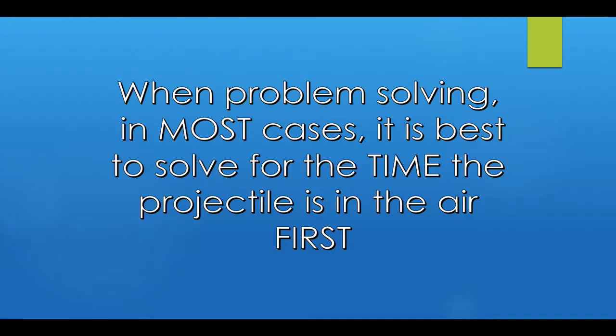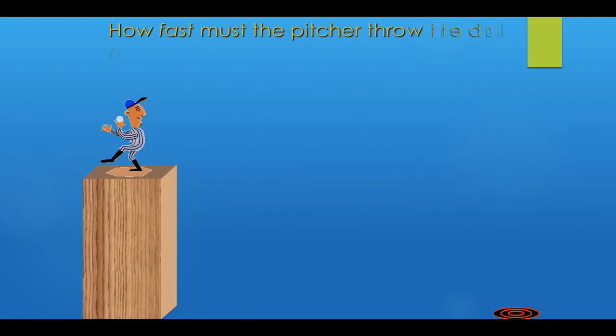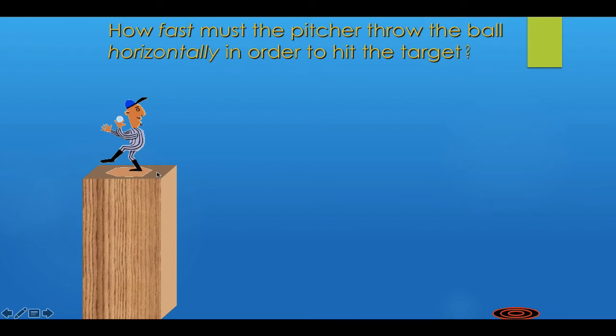Since time is the only constant across both horizontal and vertical components, we usually solve for time first. In this example, a pitcher is standing on a wooden platform 7.2 meters above the ground, trying to hit a target 11 meters away from the base. We need to figure out how fast he needs to throw the ball to hit the target in the center.